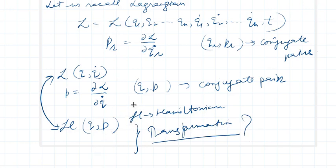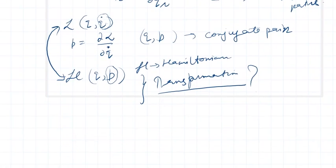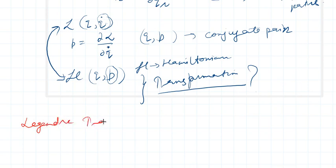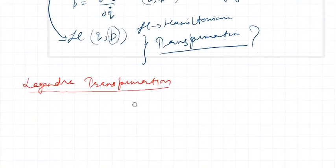Since we are changing the variables, such a transformation can be done in mathematics, and it comes under the topic of Legendre transformation. This is a type of transformation in which the variables are changed and we move from one function to another function. So let us understand what the Legendre transformation is.